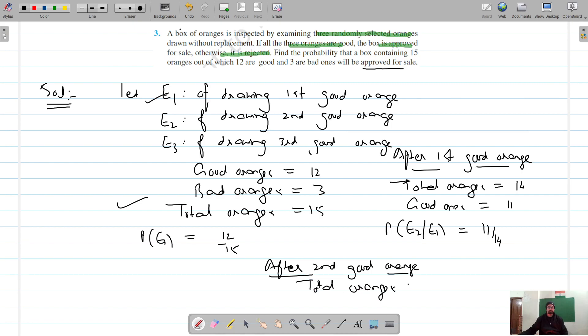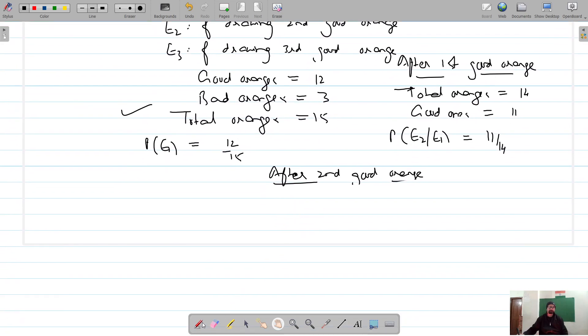Our total now are 13, and the good ones are 10. So probability of third good orange when first and second has already happened is 10 out of 13.